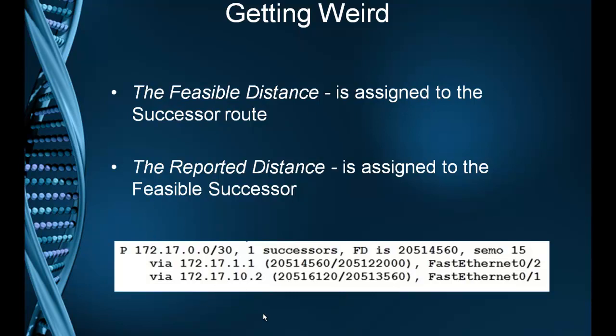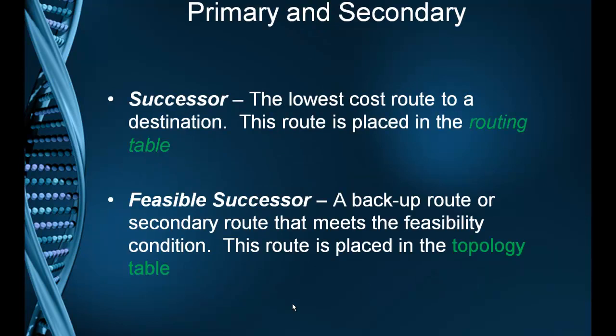Here's what a little topology table would look like for one network destination. Just make sure you're good with this: the feasible distance is assigned to the successor route, and reported distances are assigned to feasible successors. The successor is the lowest cost route to a destination, and that route gets placed in the routing table. The feasible successor is a backup or secondary route that meets the feasibility condition, and it's not in the routing table — it gets placed in the topology table.